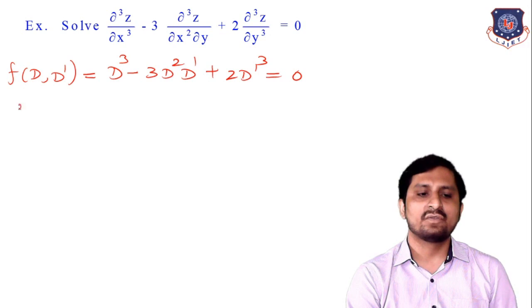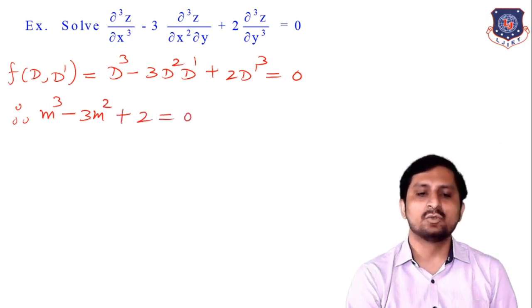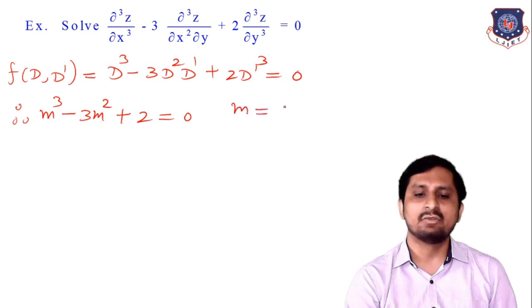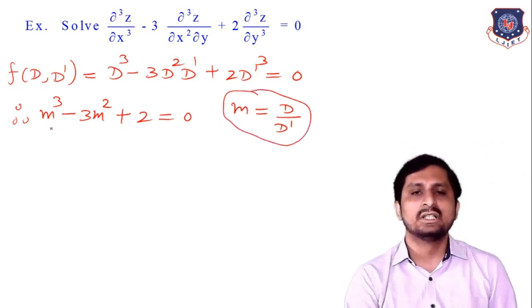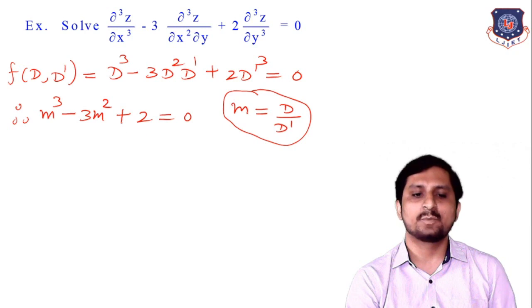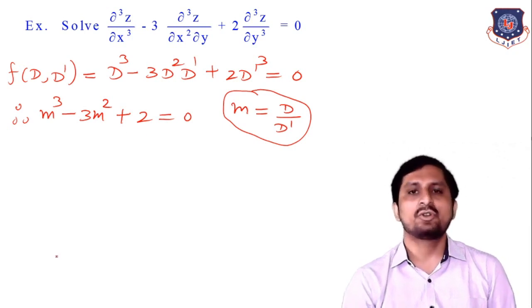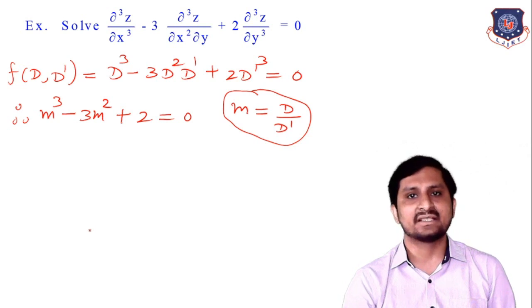So the auxiliary equation in m is: m³ − 3m² + 2 = 0, where the value of m is D/D'. Now I want to find the roots of this third-degree polynomial m³ − 3m² + 2 = 0. First, you have to find at least one root from this equation, and after that you can apply the synthetic division method, which you already know from your lower standards.